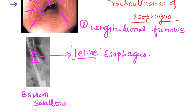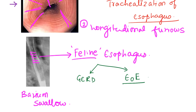For your exams, feline esophagus is noted in two important conditions: one is gastroesophageal reflux disease (GERD), and the second is eosinophilic esophagitis (EoE). Remember that GERD is a much more common condition in general. So if asked 'feline esophagus is commonly encountered with,' mark GERD as the first answer. If GERD is not given, then mark eosinophilic esophagitis as the second answer.